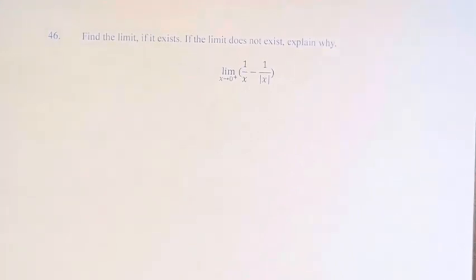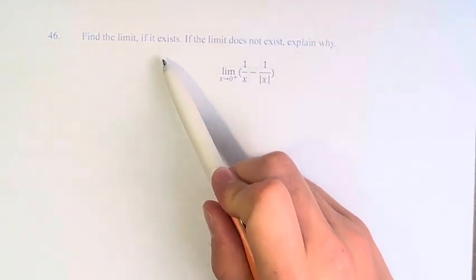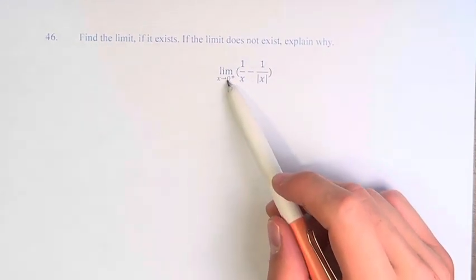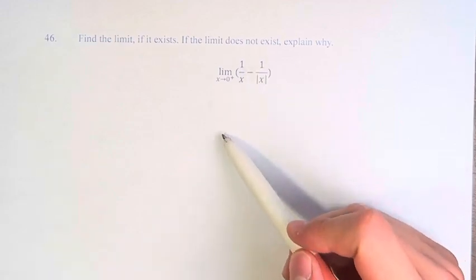Hello, and welcome back to another video. In this problem, we're asked to find the limit if it exists, and if the limit does not exist, explain why. The limit as x approaches 0 from the right of 1 over x minus 1 over the absolute value of x.